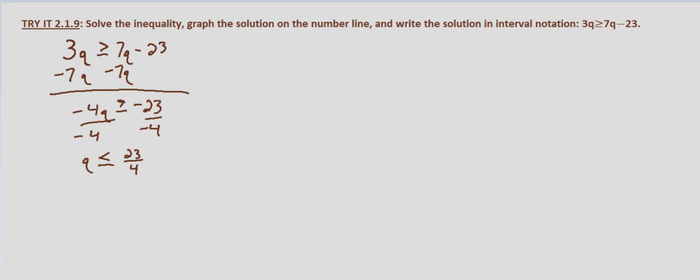So q is less than or equal to just a little bit below 6. We'll go ahead and draw our number line. We'll start with 6 over here on this end and then this would be 23 fourths. You can use whatever scale you want as long as you put it in the correct place. This would be 22 fourths or 11 halves.